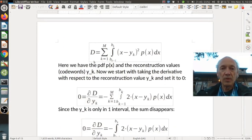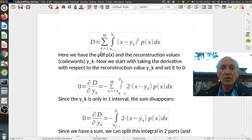So here we are back again at the beginning. Here we now have the PDF p(x) and the reconstruction values or codewords y_k. Actually in the multi-dimensional case, y_k is called a codeword.